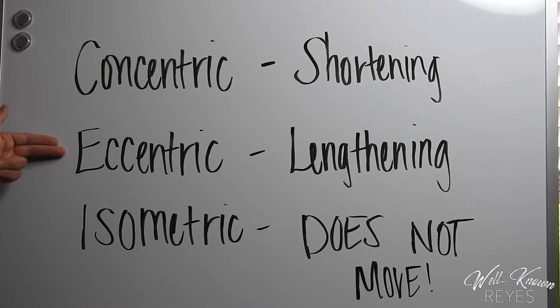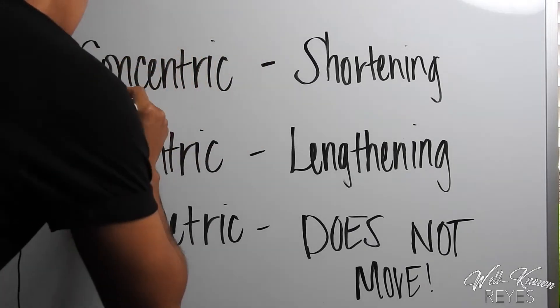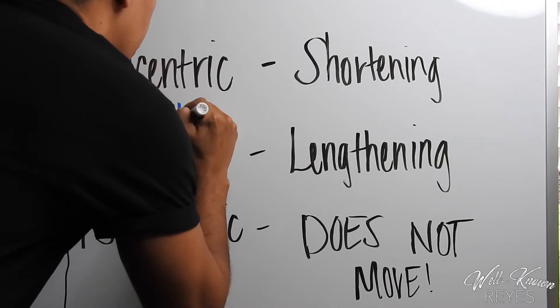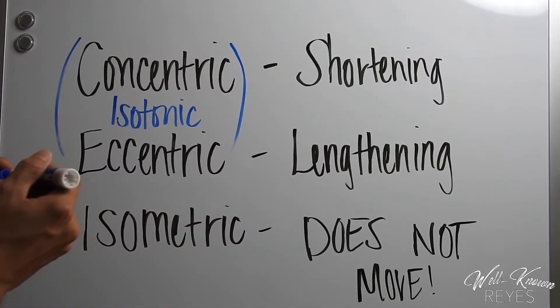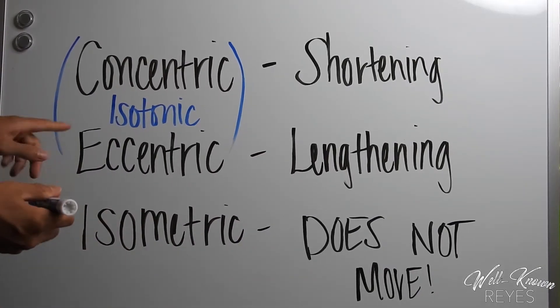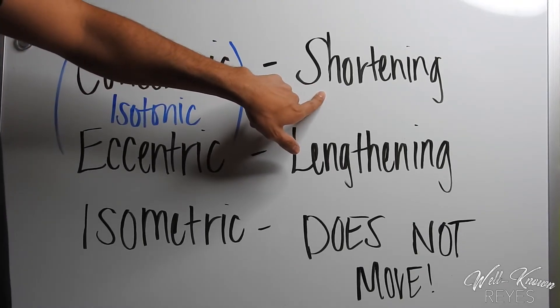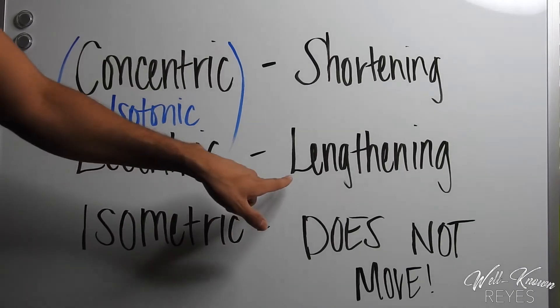Concentric and eccentric contractions are also isotonic contractions. A concentric contraction is when the muscle fibers shorten. An eccentric contraction is when the muscle fibers are lengthening.